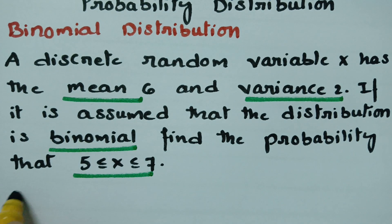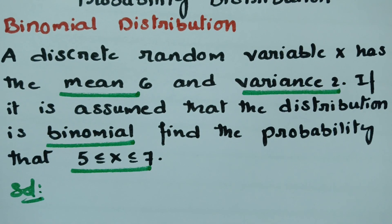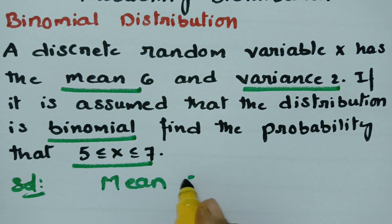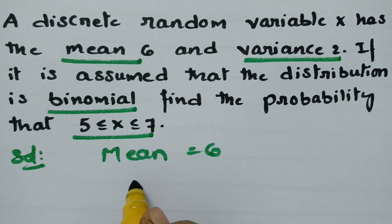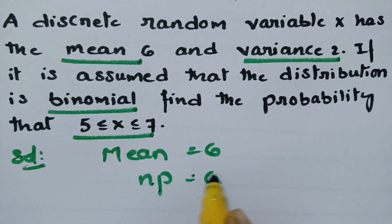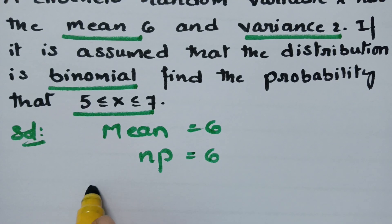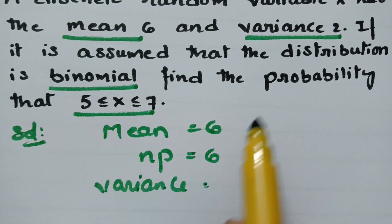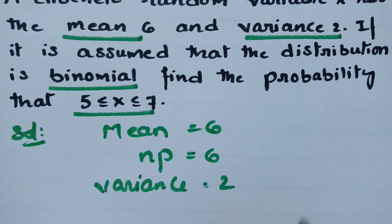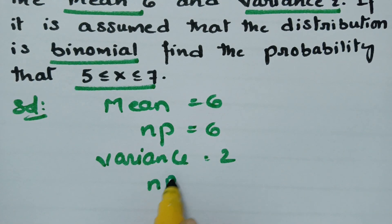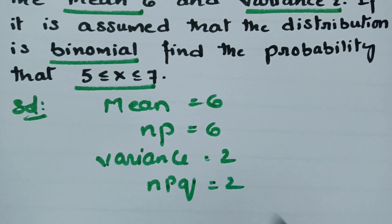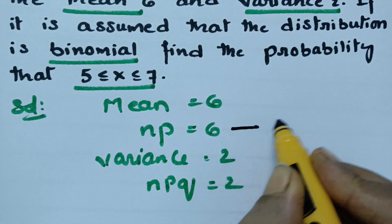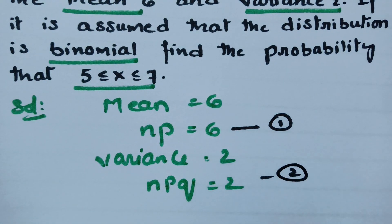In the solution, what is given? The mean of the binomial distribution, mu, is given as 6. The mean formula is equal to NP, so NP = 6. Also, the variance of the probability distribution is given as 2, so variance = NPQ = 2. This is equation 1 and equation 2.